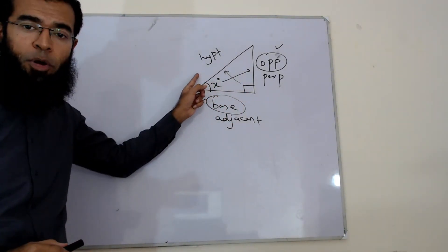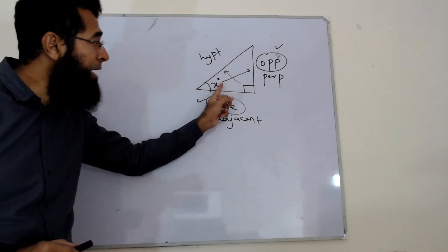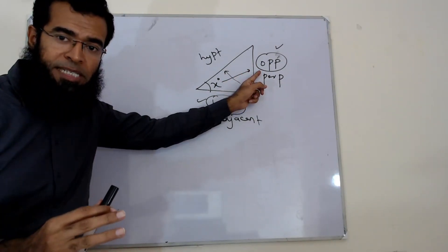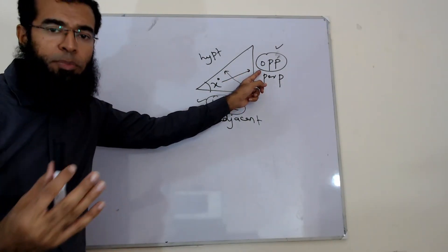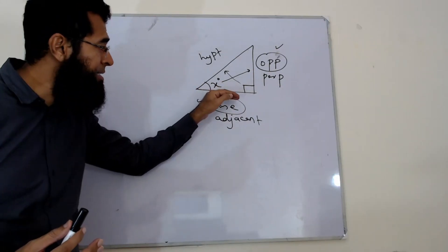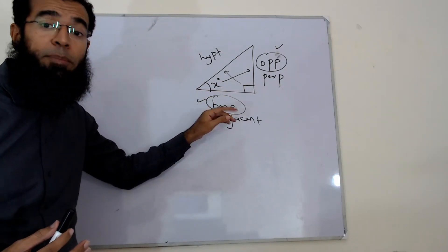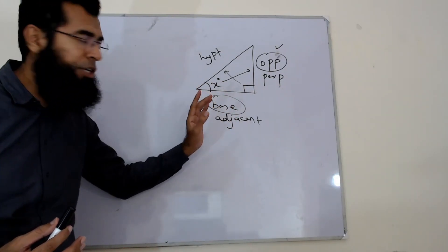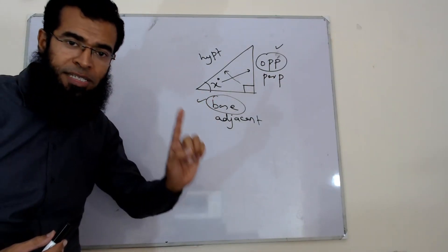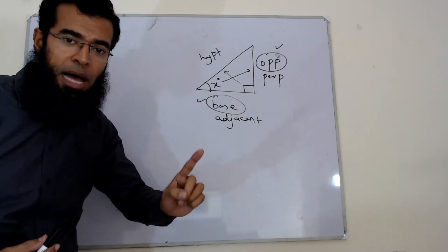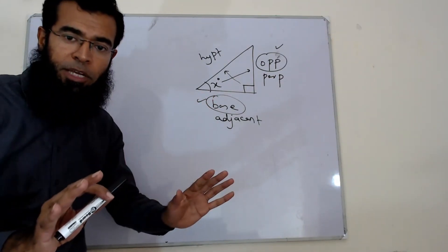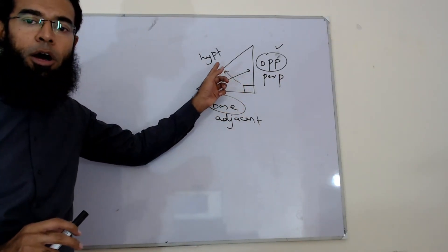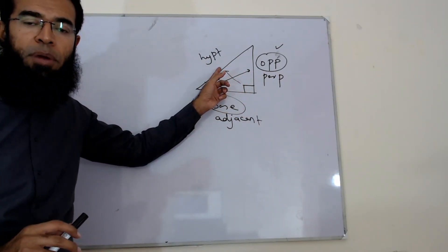So please remember: 90 degrees ke opposite side is always the hypotenuse, the given angle's opposite side is always the opposite, and the remaining side is the base or adjacent. The first side you should mark is the hypotenuse — 90 degrees ke opposite side — to avoid any confusion.